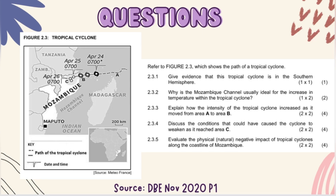Discussing conditions that caused the cyclone to weaken as it reached area C: the biggest reason is that area C is on land, and land causes friction, which decreases wind speed and takes away the energy of the tropical cyclone. Another reason is that land is dry compared to water, so there is a decrease in moisture — and the tropical cyclone needs moisture to sustain itself.